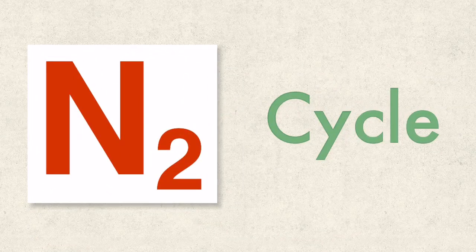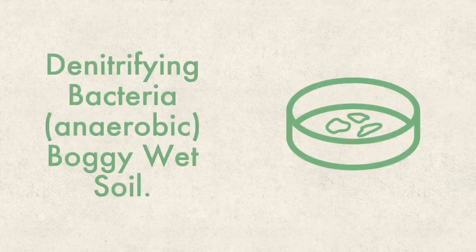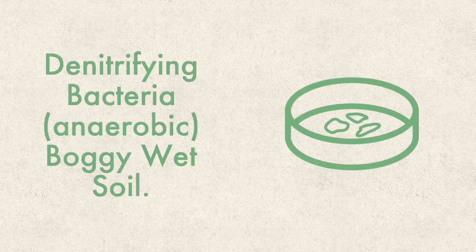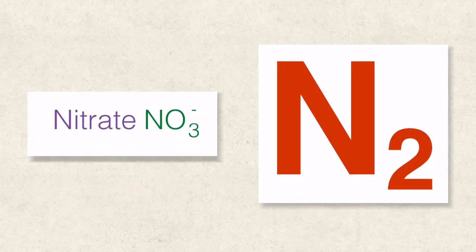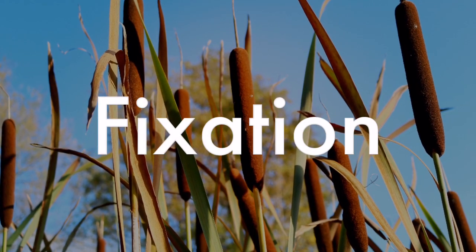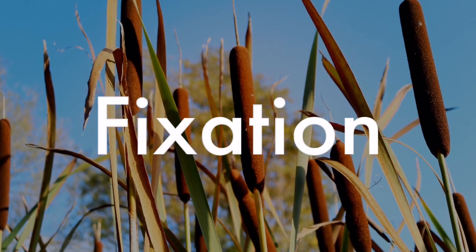This is the nitrogen cycle — eventually nitrogen has to find its way back to the atmosphere. This last part of the cycle involves denitrifying bacteria; they are anaerobic and found in boggy, wet, heavy soil. They convert nitrate back to atmospheric nitrogen. The cycle commenced with nitrogen fixation.